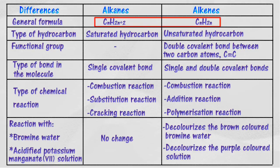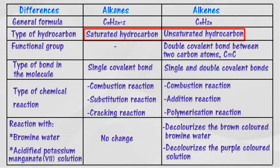Alkanes can be represented by the general formula CₙH₂ₙ₊₁, while alkenes can be represented by the general formula CₙH₂ₙ. Alkanes are saturated hydrocarbon compounds — each carbon atom in an alkane molecule has four single covalent bonds.